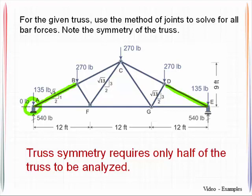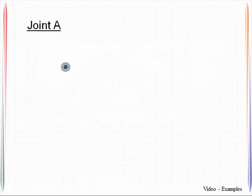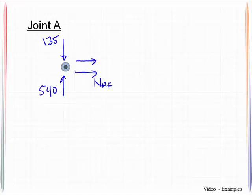So we're going to start by analyzing joint A, and we will sketch the free body diagram for that particular joint, starting with the forces that we already know are being applied: 135 pounds here and the 540 pounds here. Then we will sketch the unknown forces for the bars that are attached. What we always do is assume the unknown forces in the bars to be in tension, and that means that the arrows will point out from the joint itself. Then let's get the horizontal and vertical components for bar AB.